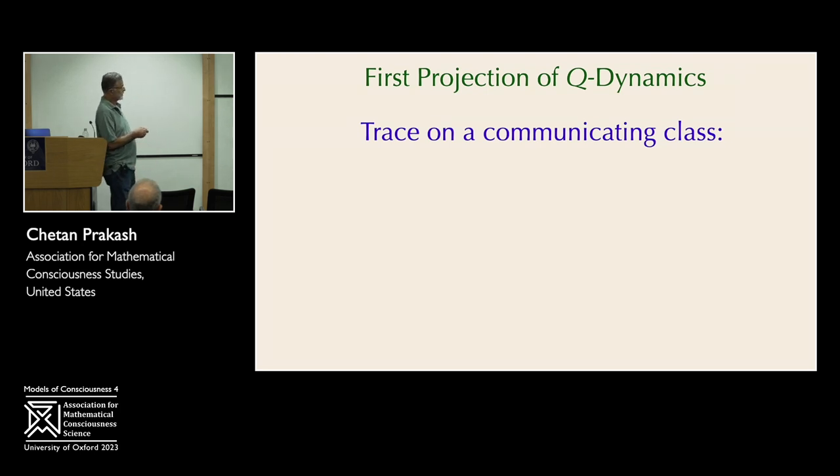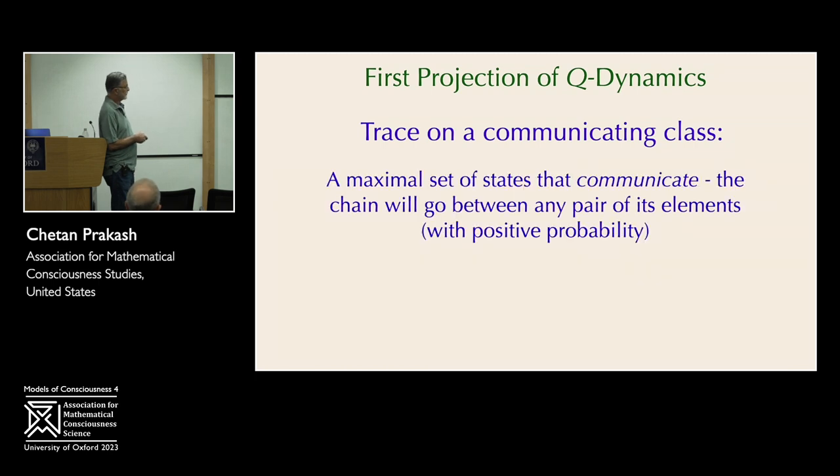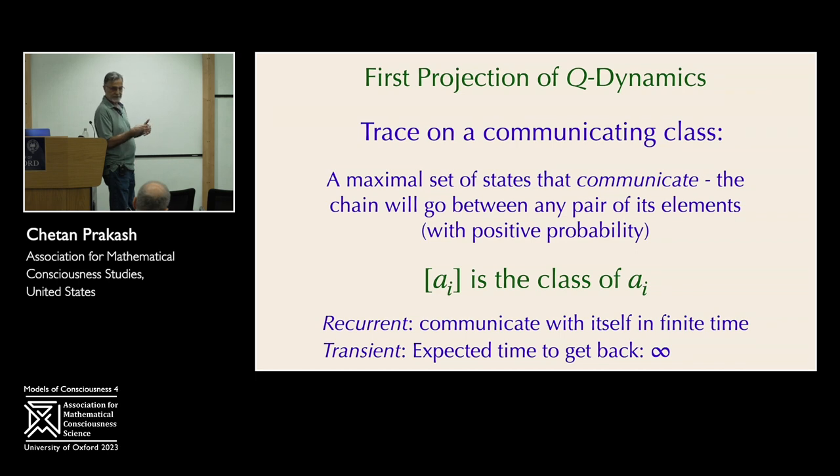And similarly, you can also do sampling on top of that, which in some sense decreases your knowledge of the original chain even further. So the idea here is then we're going to be tracing on a communicating class, which is a maximal set of states that communicate with each other. So the chain can go between any pair of those elements with positive probability. There are two types of such communicating classes. You can have recurrent communicating classes, which communicate only with themselves. You never leave that particular set. And if you're outside of it and you come in, you don't leave. And then you have transient communicating classes, which you eventually filter out of.